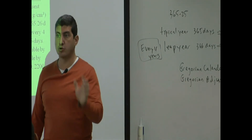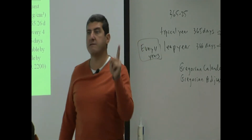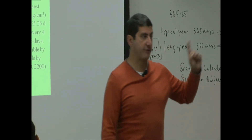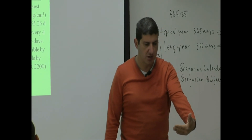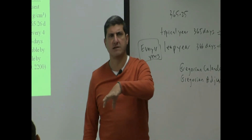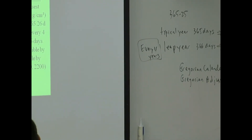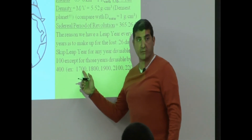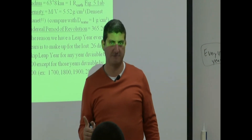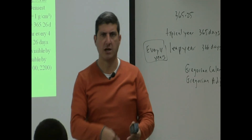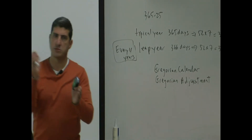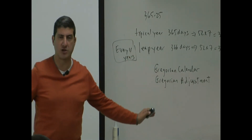Then they said, in order to not make this mistake anymore, every 100 years where we're supposed to add a leap year, we're not going to add it — except for those years divisible by 400. So the next 100-year mark was 1600, but since 1600 is divisible by 400, they didn't apply that rule. Then 1700 came — it was supposed to be a leap year, but they skipped it. Then 1704 was a leap year, 1708 a leap year, continuing until 1800 — which was also supposed to be a leap year but was skipped.